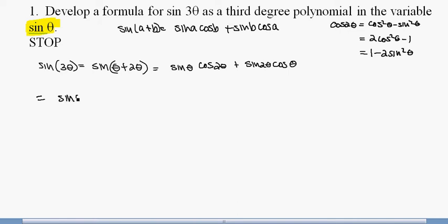So I have the sine of theta times 1 minus 2 sine squared theta plus sine 2 theta. There's only one for that, so that's 2 sine theta cosine theta times the cosine of theta.